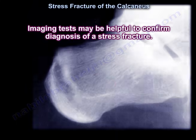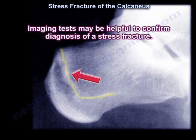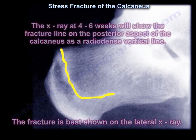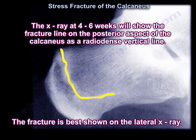Other causes of heel pain and its locations are shown in this diagram. Imaging tests may be helpful to confirm the diagnosis of a stress fracture. Early x-rays are usually negative, and the diagnosis is usually done by clinical exam or by obtaining an MRI. Stress fractures may be difficult to see on x-rays until the fracture begins to heal. At 4 to 6 weeks, the x-ray will show the fracture line on the posterior aspect of the calcaneus as a radio-dense vertical line, best shown on the lateral x-ray.